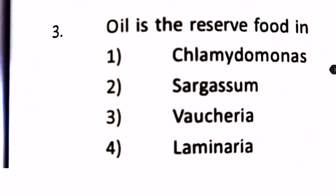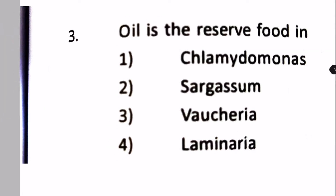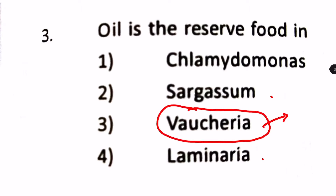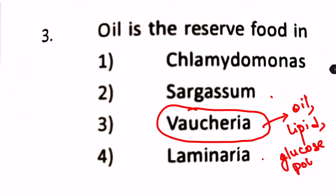Oil is the reserved food in which organism? Options are Chlamydomonas, Sargassum, Vaucheria, and Laminaria. Laminaria is rich in starch. Sargassum is brown algae and Sargassum and Laminaria are rich in laminarin content, but Vaucheria is actually rich in oil. They do not have starch; they mainly have oil and lipids and a glucose polymer. The answer will be number 3, Vaucheria.